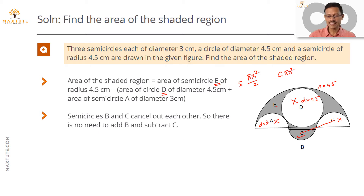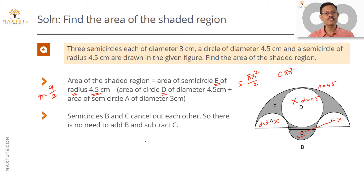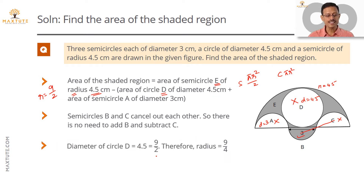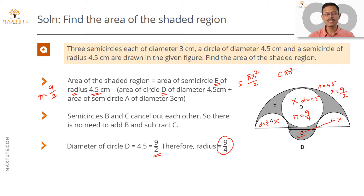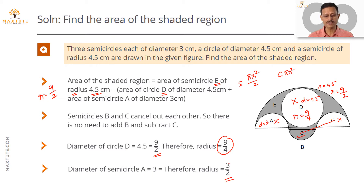For semicircle E, we are given the radius directly: radius = 4.5 = 9/2 centimeters. For circle D, the diameter is 4.5 = 9/2, so the radius is half of that, which is 9/4 centimeters. Lastly, the diameter of semicircle A is 3 centimeters, which gives a radius of 3/2 centimeters.